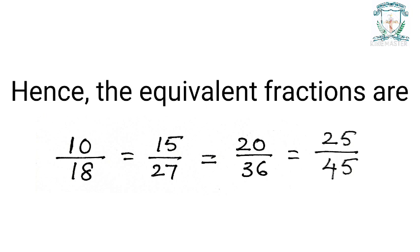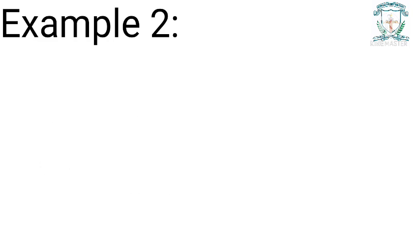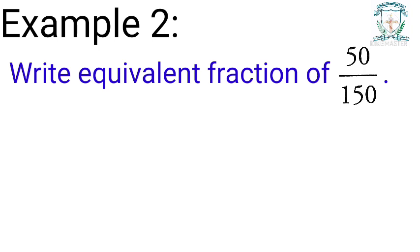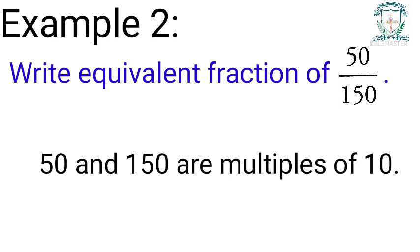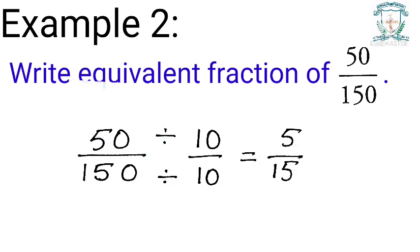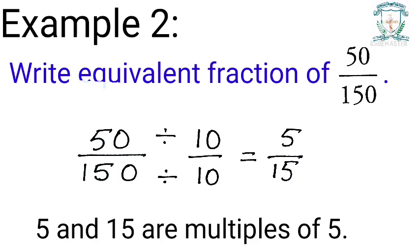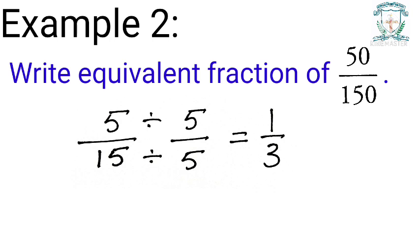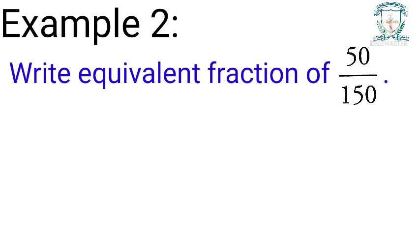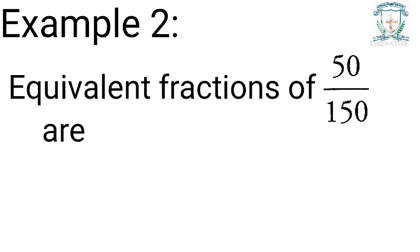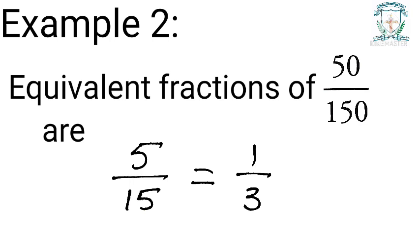Example 2: write an equivalent fraction of 50 by 150. 50 and 150 are multiples of 10, therefore we divide both by 10 to get 5 by 15. 5 and 15 are multiples of 5, therefore we divide 5 by 15 by 5 to get 1 by 3. Therefore, equivalent fractions of 50 by 150 are 5 by 15, which is equal to 1 by 3.